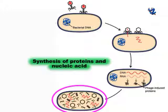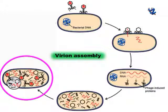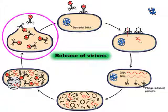Third, synthesis of proteins and nucleic acids: the host's normal synthesis of proteins and nucleic acids is disrupted and it is forced to manufacture viral DNA and proteins instead. Fourth, virion assembly: the base plates are assembled with the tail first; the head capsids are constructed separately and then joined with the tails; the DNA is packed efficiently within the heads. Fifth, release of virions: phages are released via lysis of the cell, and the released virions are capable of infecting a new bacterium.